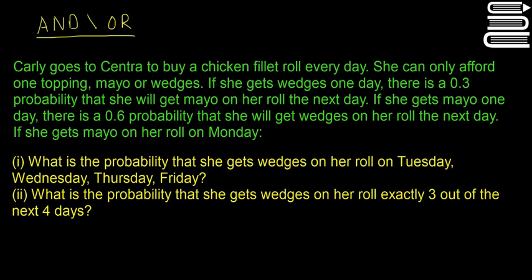So Carly goes to Centra to buy a chicken fillet roll every day. She can only afford one topping: mayo or wedges. If she gets wedges one day, there's a 0.3 probability she will get mayo on her roll the next day. If she gets mayo one day, there is a 0.6 probability that she will get wedges on her roll the next day.